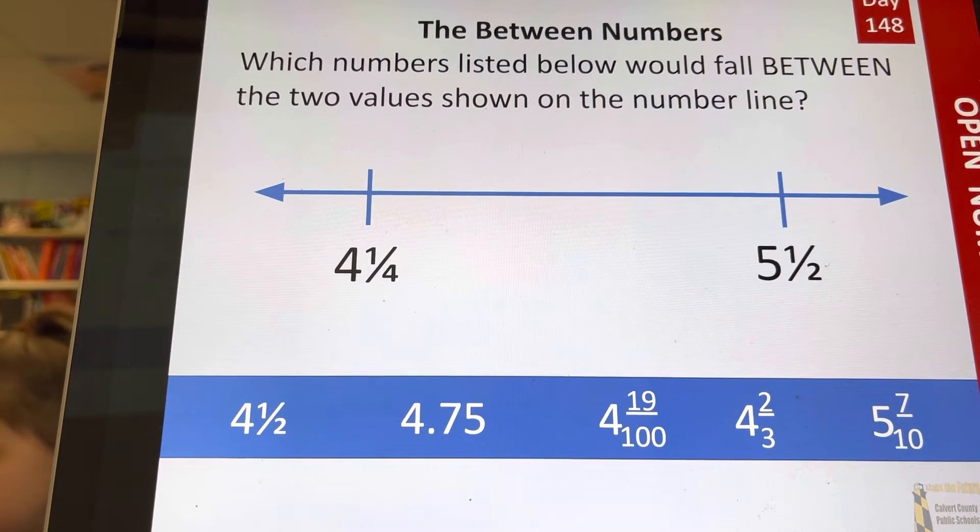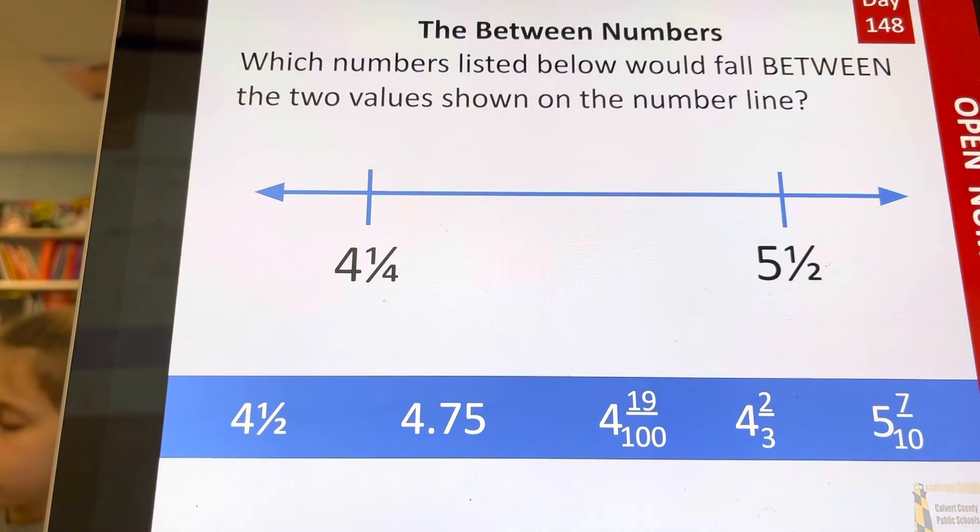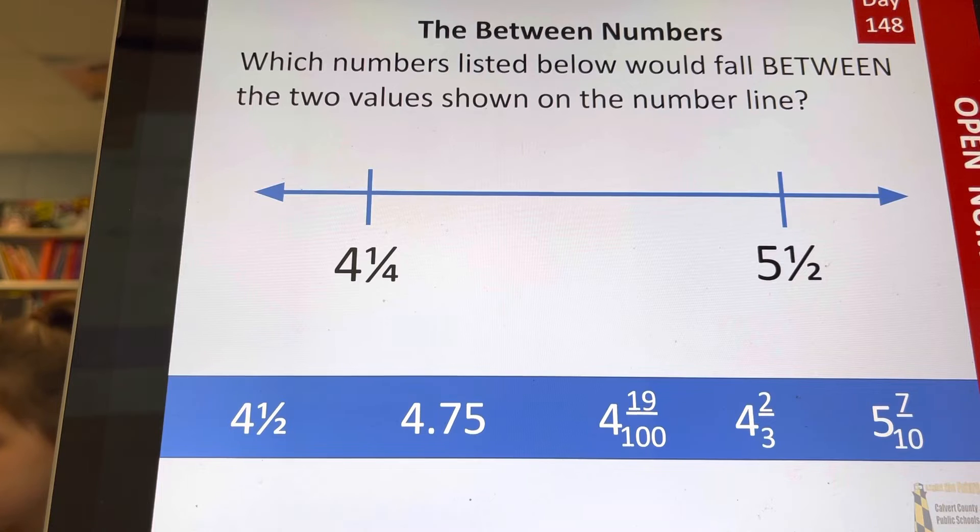Leo, let me ask you this: four and one-fourth as a decimal number, what would it be? [Student answers] Good, four point two five, four point two five.